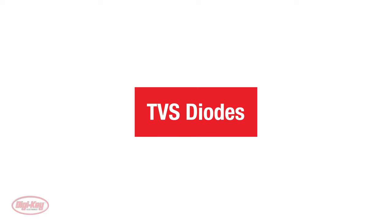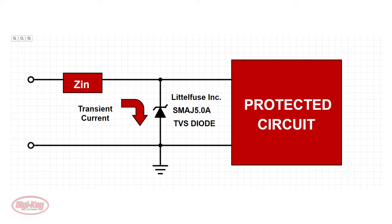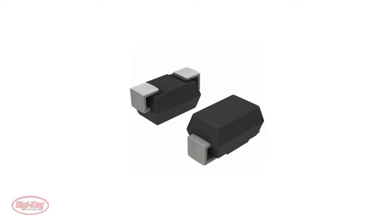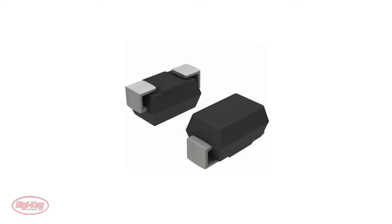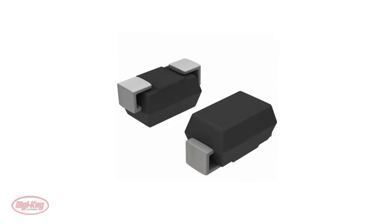Transient voltage suppressor diodes, or TVS diodes, are solid state devices designed to protect circuits from transient voltages. A TVS diode acts as a parallel component that protects sensitive semiconductors from ESD, lightning, and other sources of voltage spikes. During normal operation, a TVS diode operates at high impedance, ideally appearing as an open. When a transient voltage occurs, the impedance of the TVS diode temporarily becomes very low, and it redirects current to ground instead of letting it enter the circuit. TVS diodes will not be damaged as long as a transient voltage or current does not exceed its maximum ratings. After the transient, it goes back to its high impedance state.